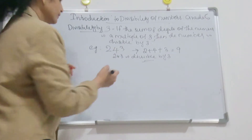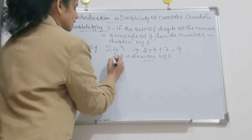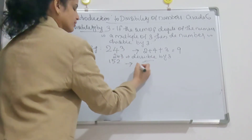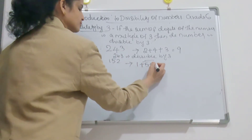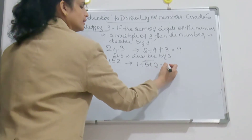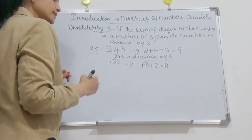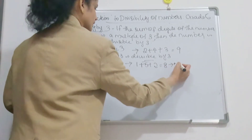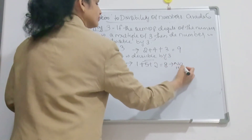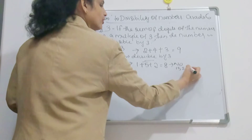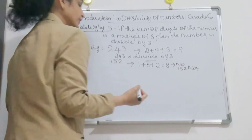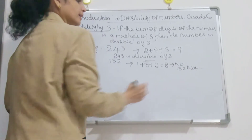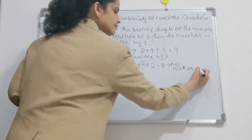Take one more example: 152. You check — 1 plus 5 plus 2. That is 6 plus 2, which is 8. Is 8 a multiple of 3? No. So 152 is not divisible by 3.